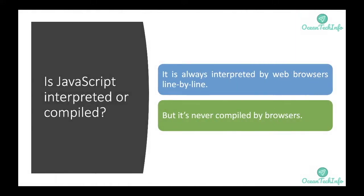Is JavaScript interpreted or compiled? Remember, it is always interpreted by the web browser line by line — each line of JavaScript code is executed by the web browser sequentially. It is never compiled by the browser.